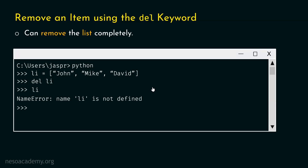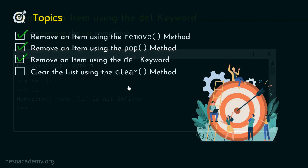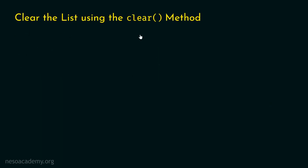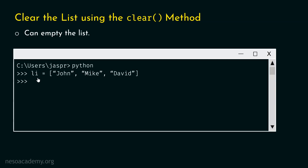The del keyword is useful when we want to delete the entire list. Now let's move on to the final topic: clearing the list using the clear method. If the requirement is to not delete the entire list but to empty it, we can use the clear method. Let's open the command prompt, consider the same list, and type li dot clear. Let's hit enter and type li — we will get an empty list. We won't get an error this time because the list is not completely deleted; it still exists but is now empty. So the clear method removes the items of the list but does not remove the list itself — this is the difference between del and clear.